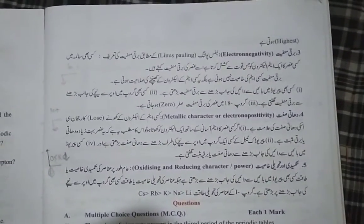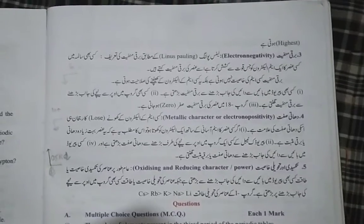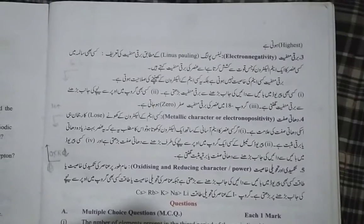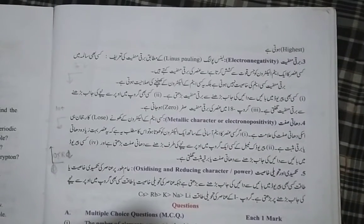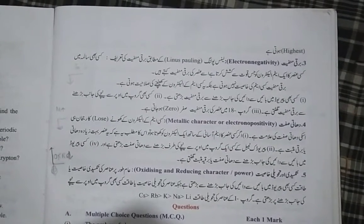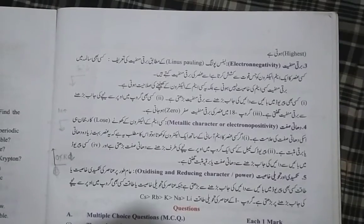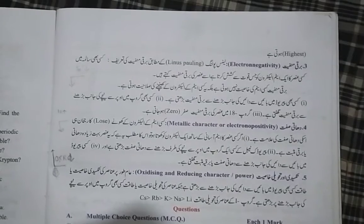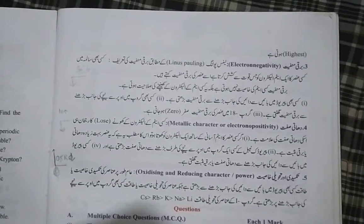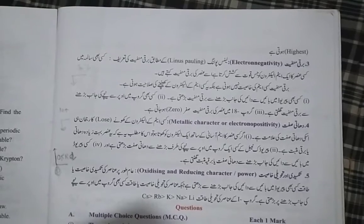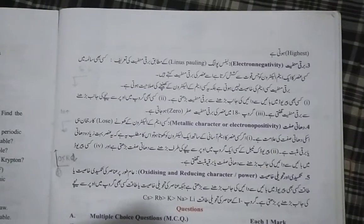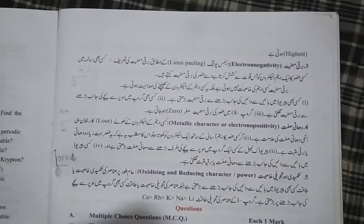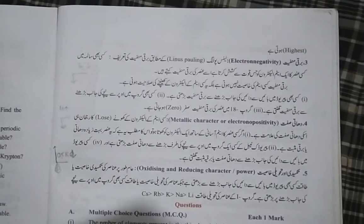Now, what is electronegativity? A scientist named Pauling gave a definition of electronegativity. Electronegativity is the ability of an atom to attract electrons towards itself. The capacity of an atom to pull electrons is known as electronegativity. It varies from left to right in periodic tables and from top to bottom in periodic tables.